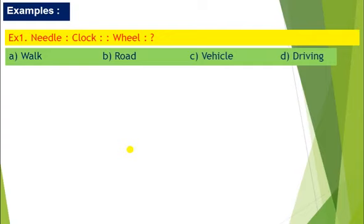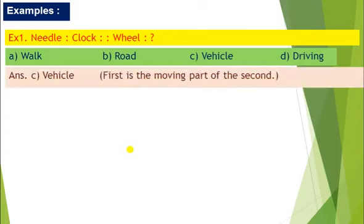Clock means needle move. So wheel will move in what? When you walk? Walk, road, vehicle, or driving? Wheel will move in vehicle. So our answer is vehicle, because the first part is the moving part of the second. Needle moves in clock, wheel moves in vehicle.